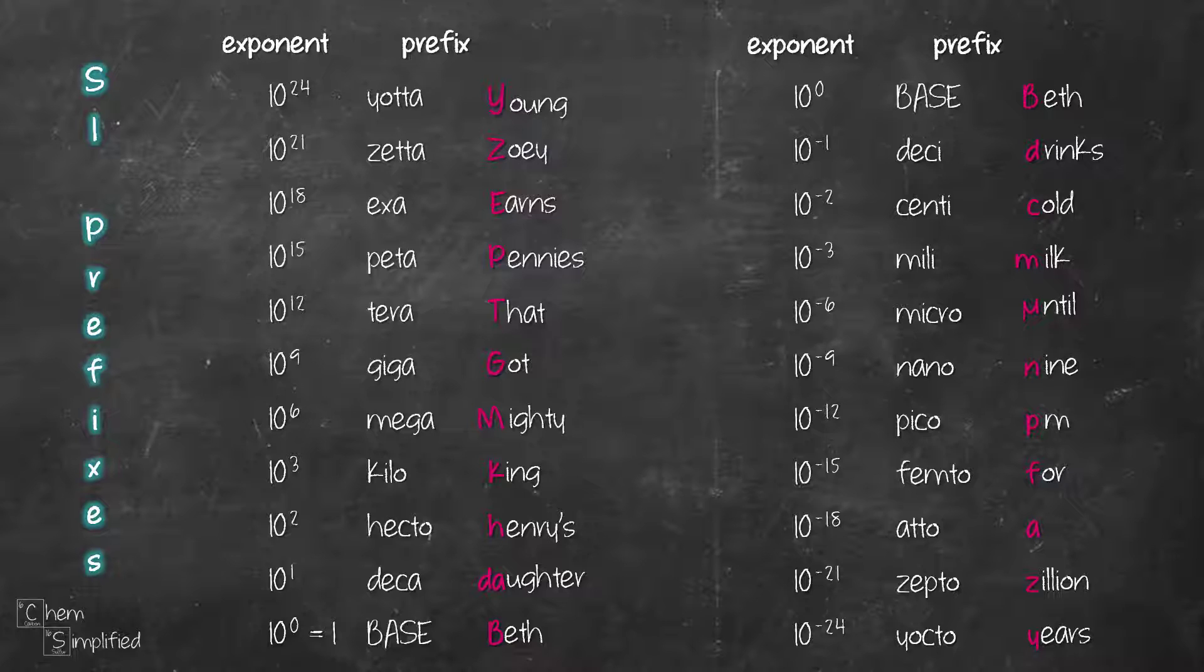Now if you remember these two lines, you'd be all set to remember all the 20 SI prefixes. Beth in this case represents the base, which is 10 to the power of 0.